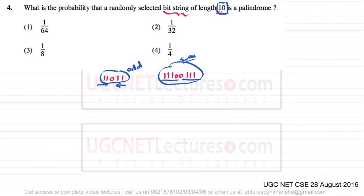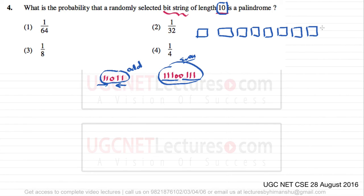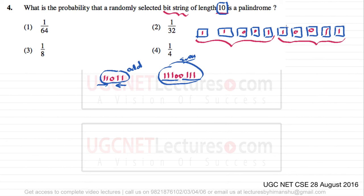The length given in this problem is even — exactly 10. Assuming these blocks represent 10 positions, for a string to be a palindrome, any combination of the first five bits must have that exact same combination repeated in reversed order in the last five. This complete structure represents a palindrome.